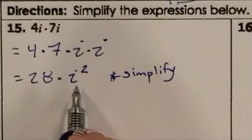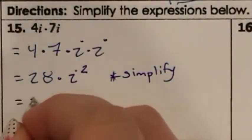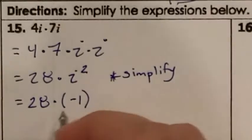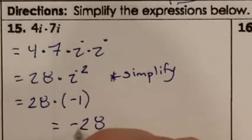Now you need to simplify. What did we say i squared was? We said i squared was negative 1. So this is 28 being multiplied to negative 1. 28 times negative 1 is negative 28.